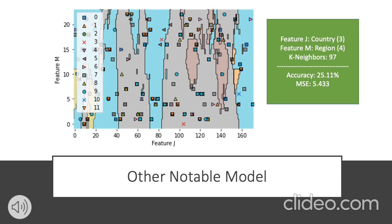Another model worth highlighting used country and region as its two feature variables — country on the X-axis and region on the Y-axis. Although it did not fare as well in prediction accuracy, it did better in lowering MSE, going from 5.5 to 5.4. Interestingly, comparing this model and the previous one, both use geographically-based features. This suggests that for predicting climate disaster damage cost, geographic location is most important — which is a nice check with reality, since that's how we normally assess natural disaster likelihood. For example, Iowa is more prone to tornadoes.